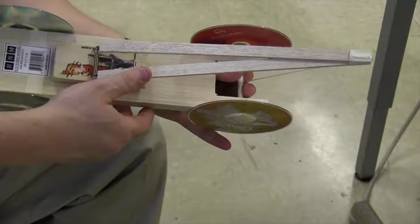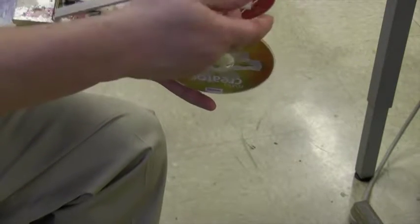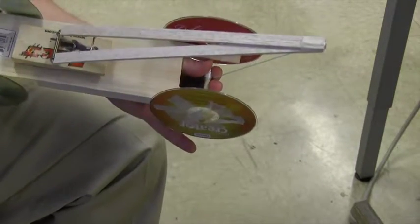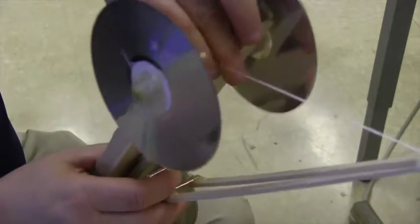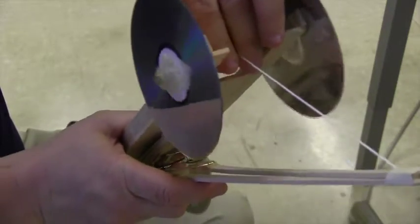So we have the string there. My arm's coming back. One partner can be helping push the arm back. The other partner can be holding the car. And the last partner can be wrapping the string up. So we're going to show you this wrapping a little bit more.